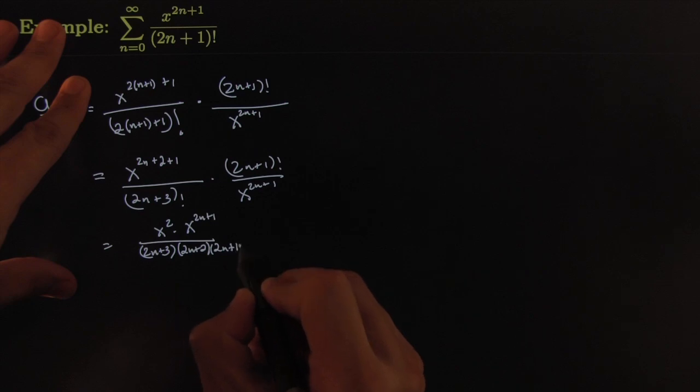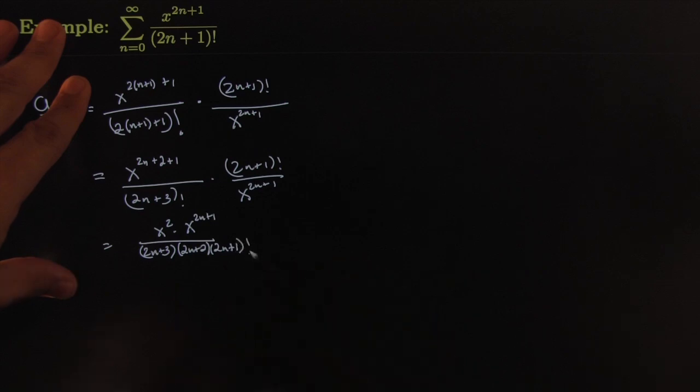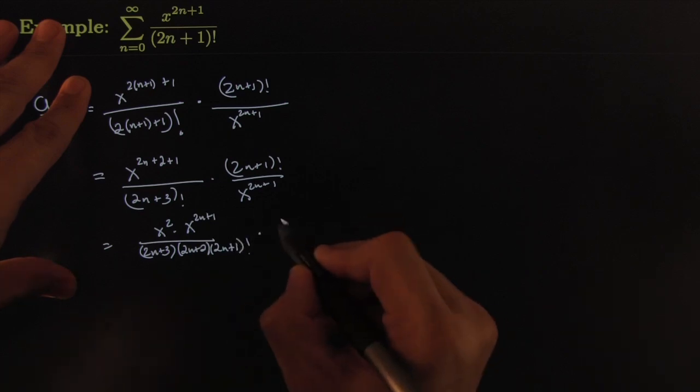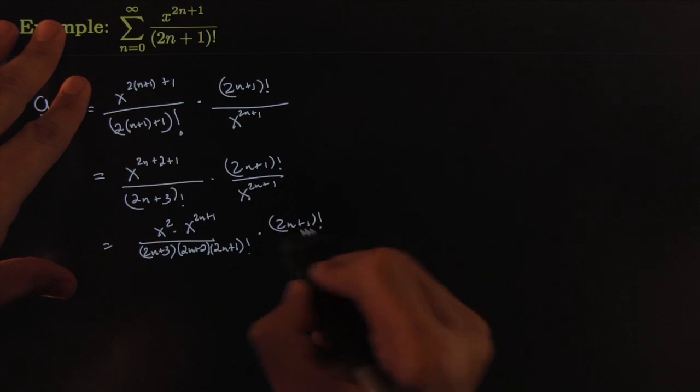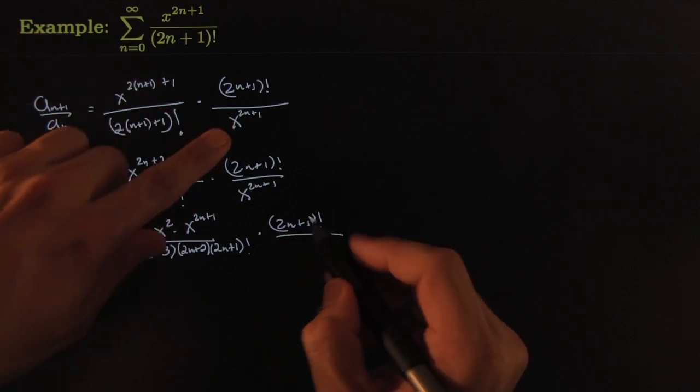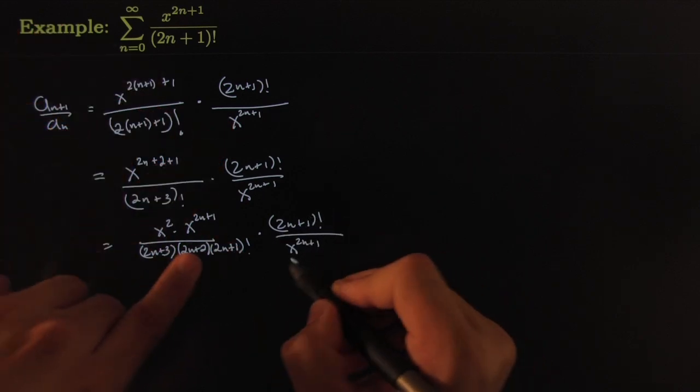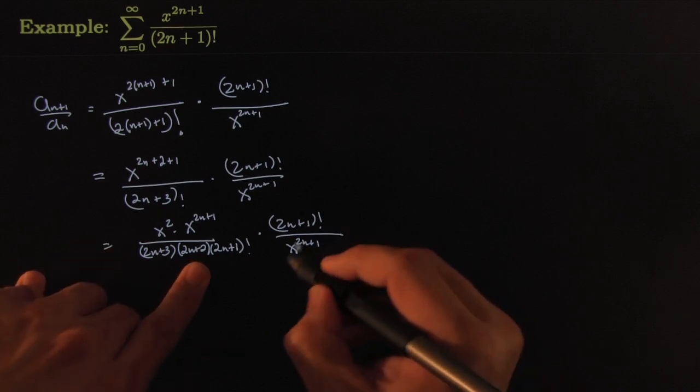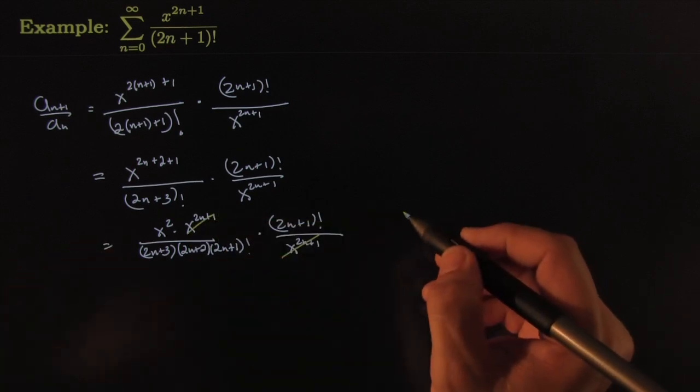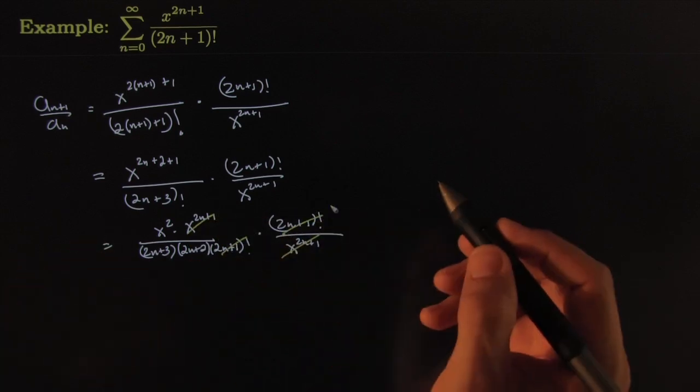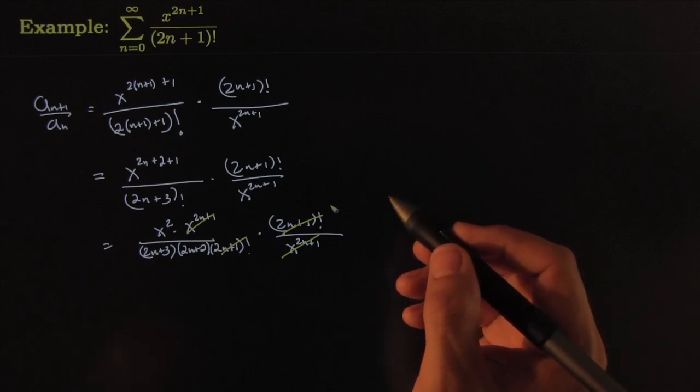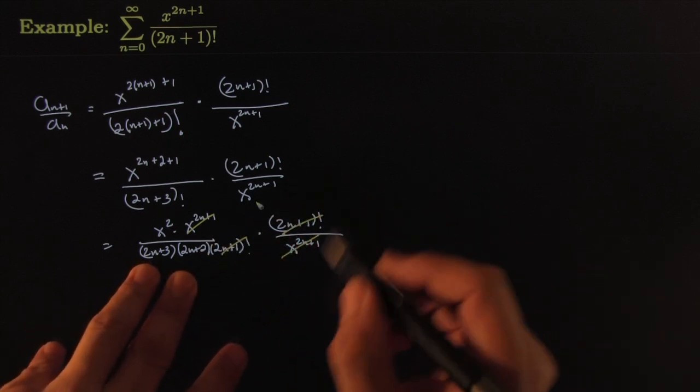On the other hand I have 2n plus 1 quantity factorial all over, working on this part now, x to the 2n plus 1. That's kind of nice because a bunch of things cancel. This cancels with that and we're left with just this piece right here.